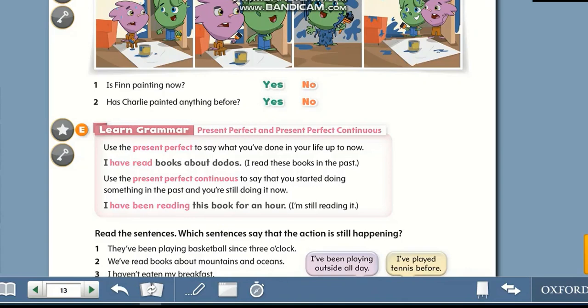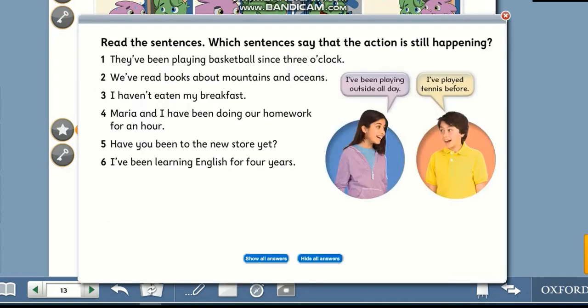For more examples, look here. Read the sentences. Which sentences say that the action is still happening? Number one: They have been playing basketball since three o'clock. What do you think? Do you think this action is completed or is still happening? Great, it's still happening. Number two: We have read books about mountains and oceans. Do you think it's still happening? No.